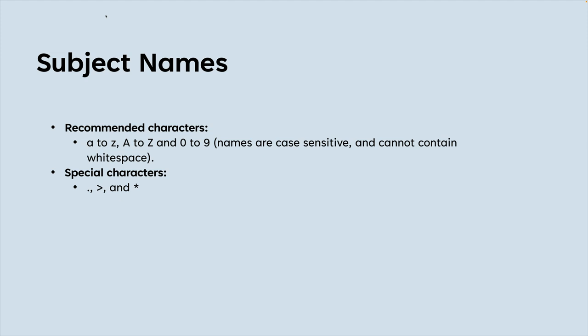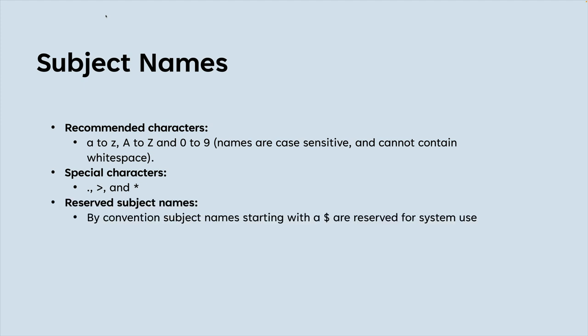What about special characters? You can use one of three characters that have particular meanings. The dot can be used as a separator for tokens within the subject name. You can also use the greater-than symbol and the asterisk. There are also some reserved subject names, and those begin with the dollar sign — any subject starting with a dollar sign is considered reserved by the system, so you should not use dollar sign in a name.